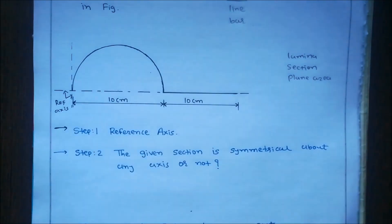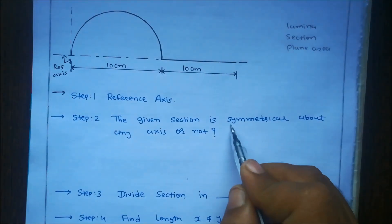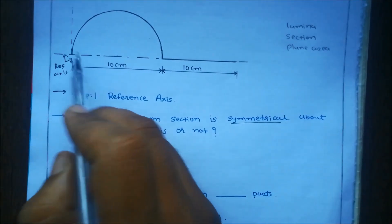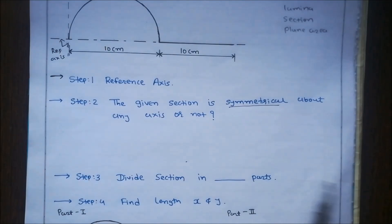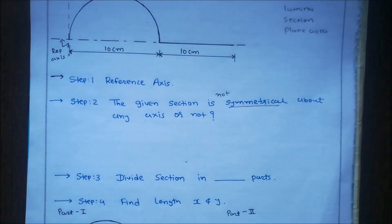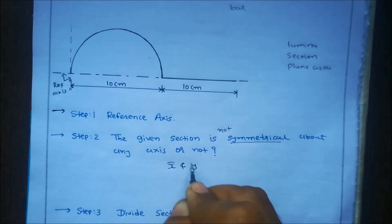In step number two, check whether the given figure is symmetrical about any axis or not. The symmetrical axis means the axis which divides the figure into two equal parts. Here the X-axis and Y-axis are not symmetrical about any axis, so we write: the given figure is not symmetrical about any axis. Therefore, we find both X-bar and Y-bar.